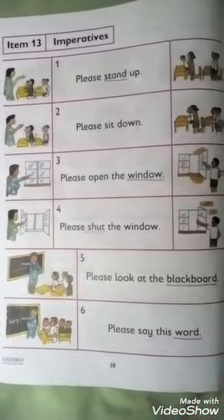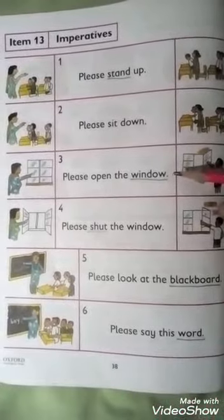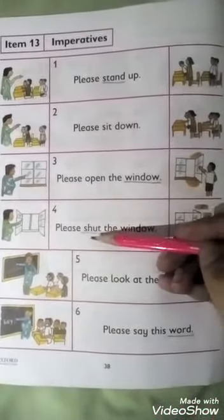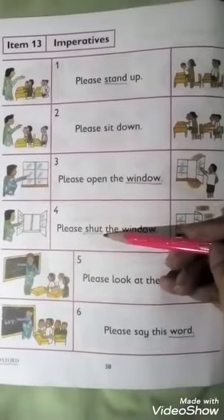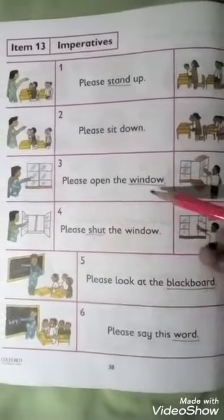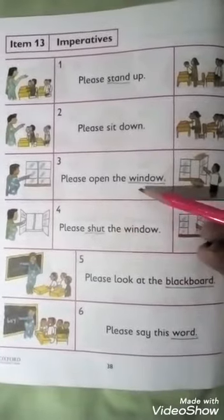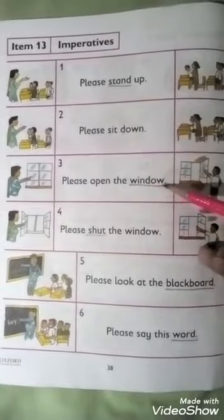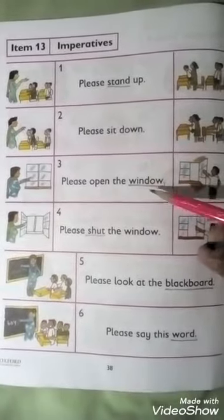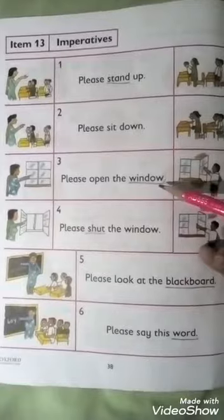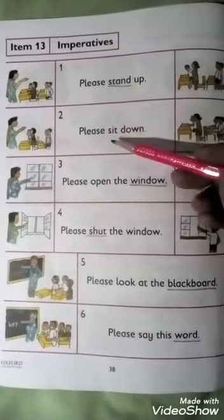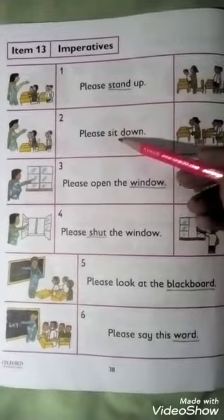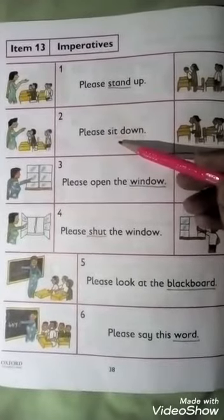Let's revise some difficult words. Can you sound 'shut'? Sh-a — shut, shut. Spell 'window': W-I-N-D-O-W, window. Can you sound 'sit'? S-I — S-I-T, sit.